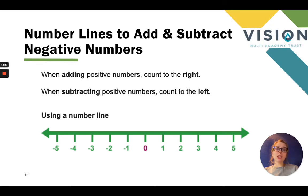It's good to have something that children can make jottings on. The rules are that when adding positive numbers, you count to the right. And when subtracting positive numbers, you count to the left. That's when we're using the number line.